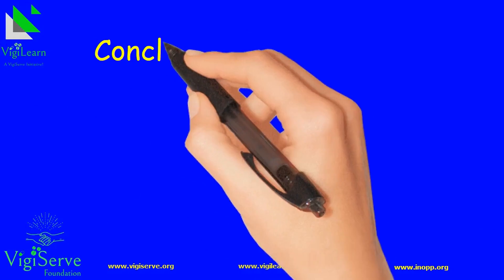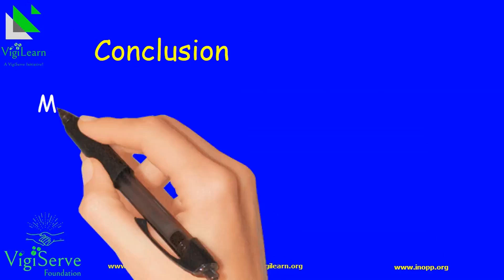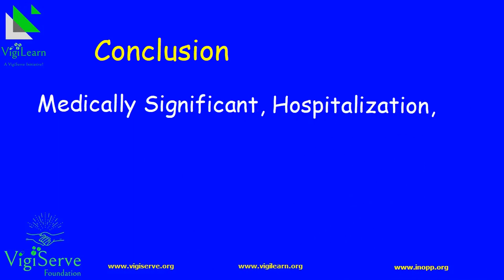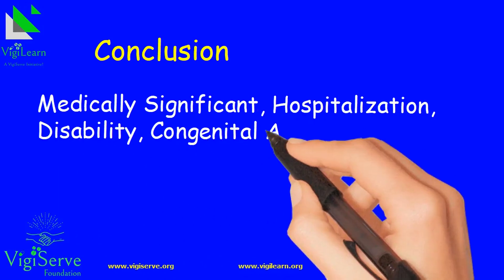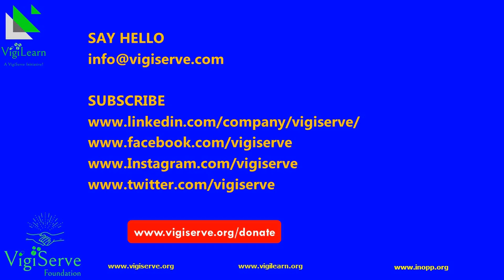To conclude, the different seriousness criteria include medically significant, hospitalization, disability, congenital anomaly, life-threatening, and death. Apart from these, the FDA recommends one more criterion, which is required intervention to prevent permanent damage.